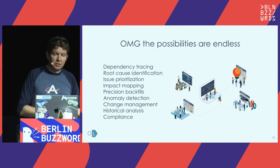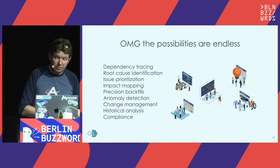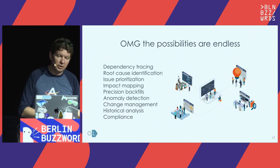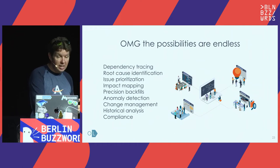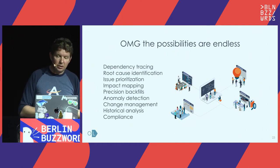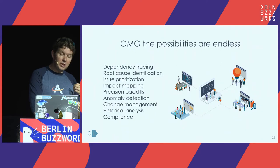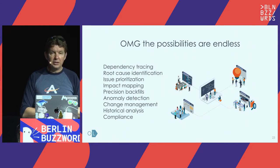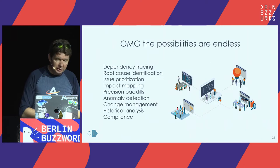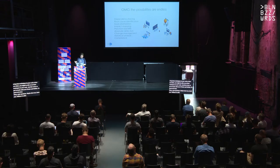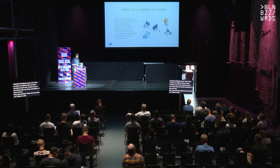There are lots of possibilities to extend this model. You can use it for dependency tracing; we provide as a service root cause identification of problems and figuring out why things are broken. You can use it for detecting the impact of a change, doing automatic backfills when something went wrong and you need to regenerate data in the past. You can use this information to precisely know what you need to regenerate, for anomaly detection, finding the cause of problems, historical analysis, and compliance — knowing where your data is going for GDPR compliance.